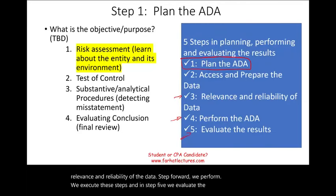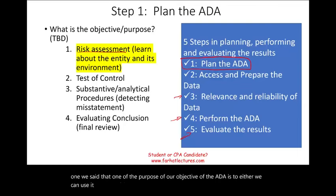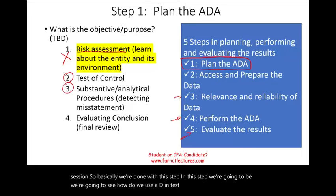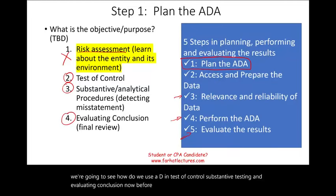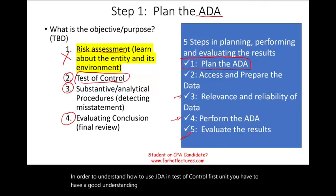Within step one, one of the objectives of the ADA is to assess risk assessment, which we covered in the prior session. In this session, we're going to see how we use ADA in test of control, substantive testing, and evaluating conclusions. Before I proceed, I should mention that in order to understand how to use ADA in test of control, you first have to have a good understanding of test of control. The same concept applies to substantive testing, analytical procedures, and evaluating the final results.